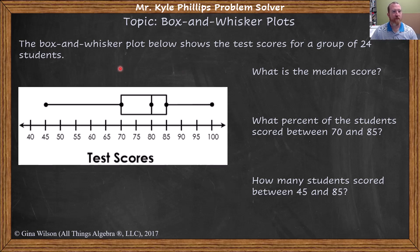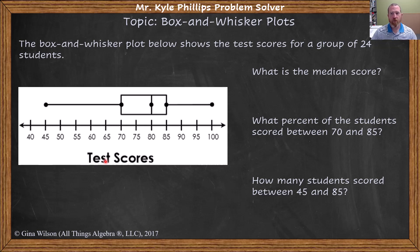Hey everybody. In this video we're talking about box and whisker plots and specifically how to read and interpret one. Here we have a box and whisker plot illustrating test scores from a given class. They give us these questions: what is the median score, what percent of students scored between 70 and 85, and how many students scored between 45 and 85. Before we jump into those, let's talk about the characteristics of a box plot.